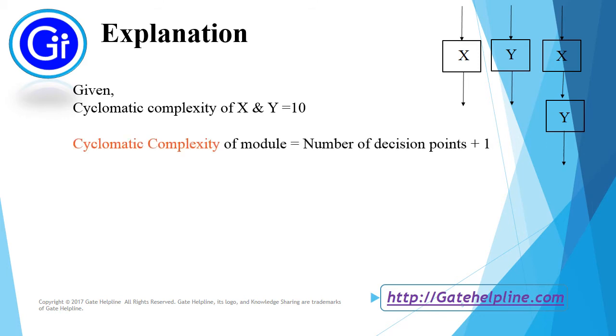So we will use this formula. According to this formula, number of decision points in X will be 10 minus 1 equals 9, and number of decision points in Y is also 9.